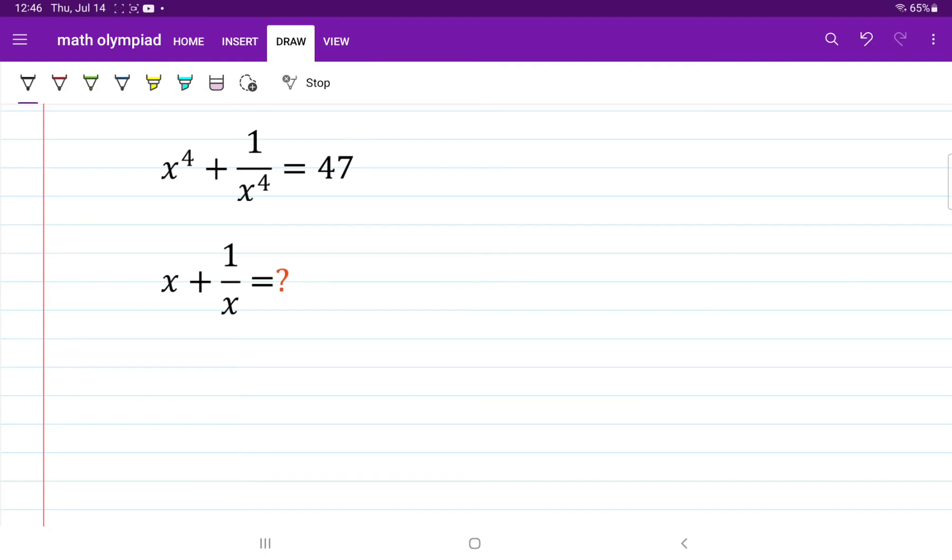So to get started, let's focus on the left side of this equation. We are going to rewrite x to the power 4 plus 1 over x to the 4 in terms of x squared. So the equation will be x squared squared plus 1 over x squared squared equals 47.